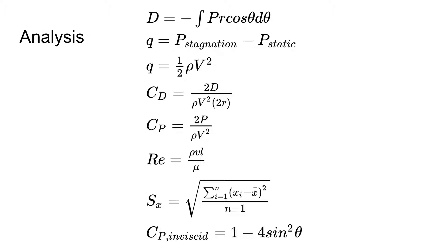Standard deviation is the square root of the sum of the square of the value of each point minus the average of the values, all divided by the number of values minus one. Coefficient of pressure of an inviscid flow around a cylinder can be calculated as one minus four times the sine squared of the theta.